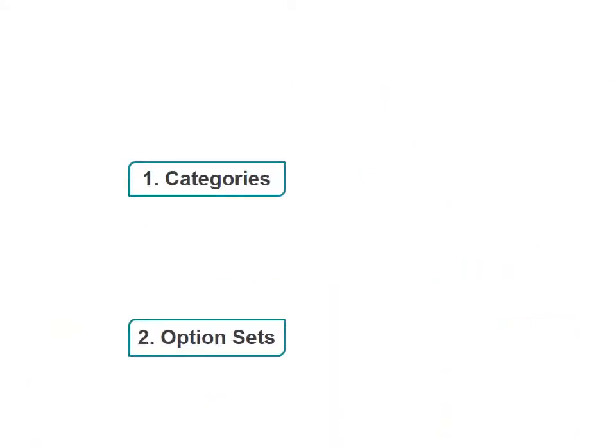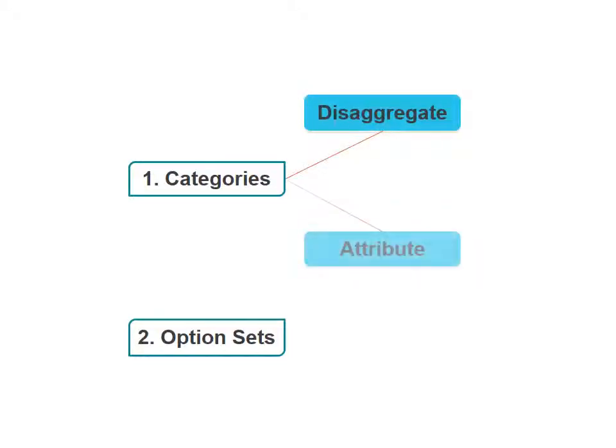First off we have categories, and this is going to be what we spend most of our time on today because there are actually two types of categories in DHIS2 — and that would be disaggregate and attribute. We'll also be looking at option sets within this video because, to be honest, they're quite simple.